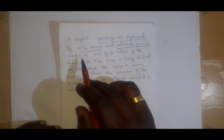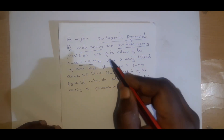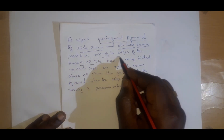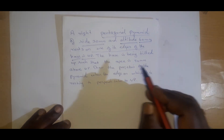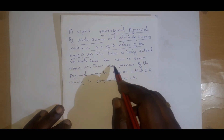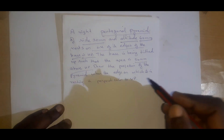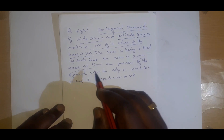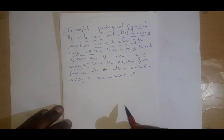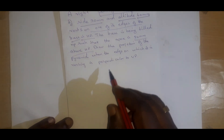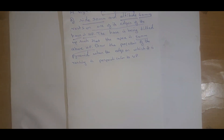Now, where is it resting? It rests on one of its edges on the base — it is resting on the HP. It is resting with one of its base edges on the HP. The base is being tilted up such that the apex is 50 mm above the HP. They have not given the angle, but they have given another clue for it.